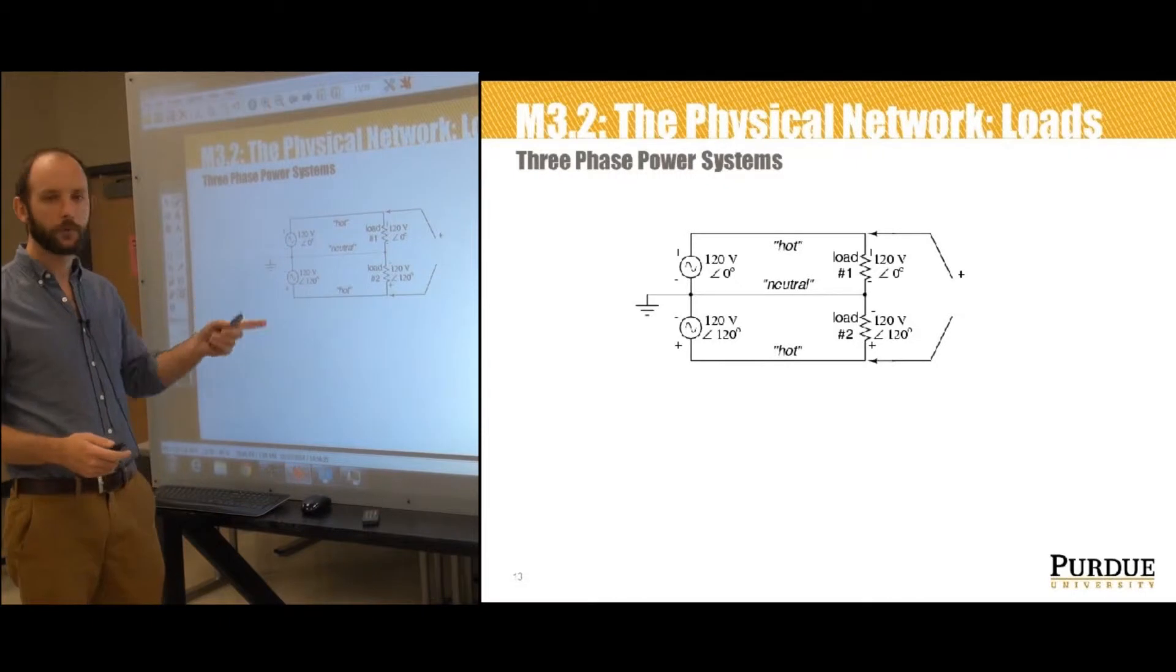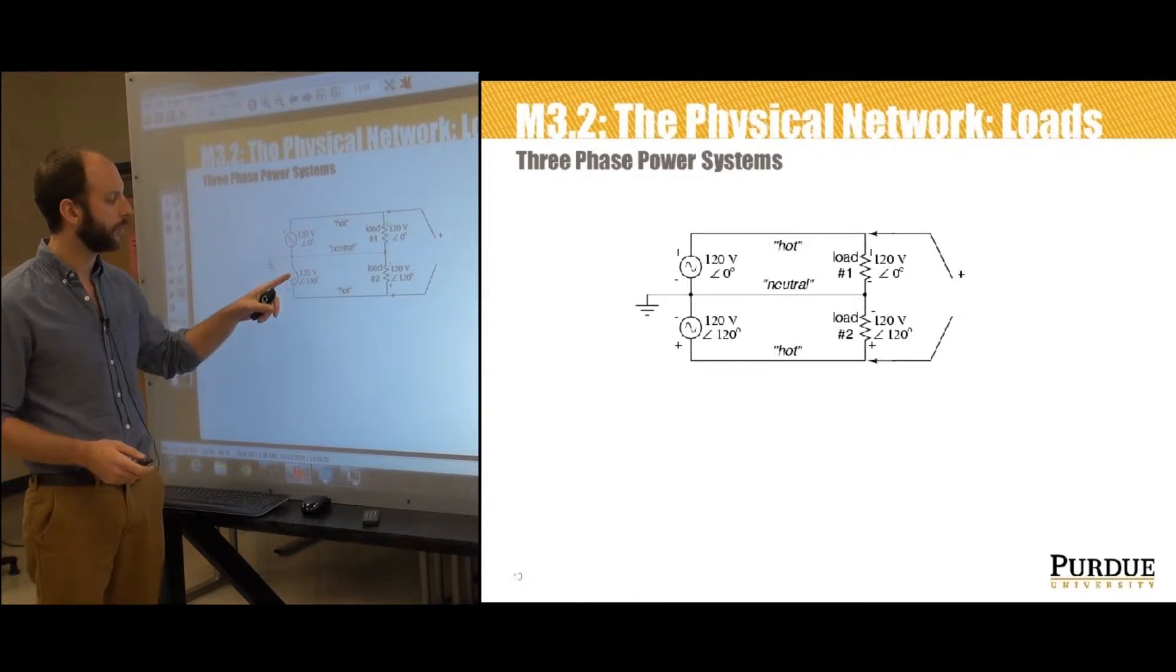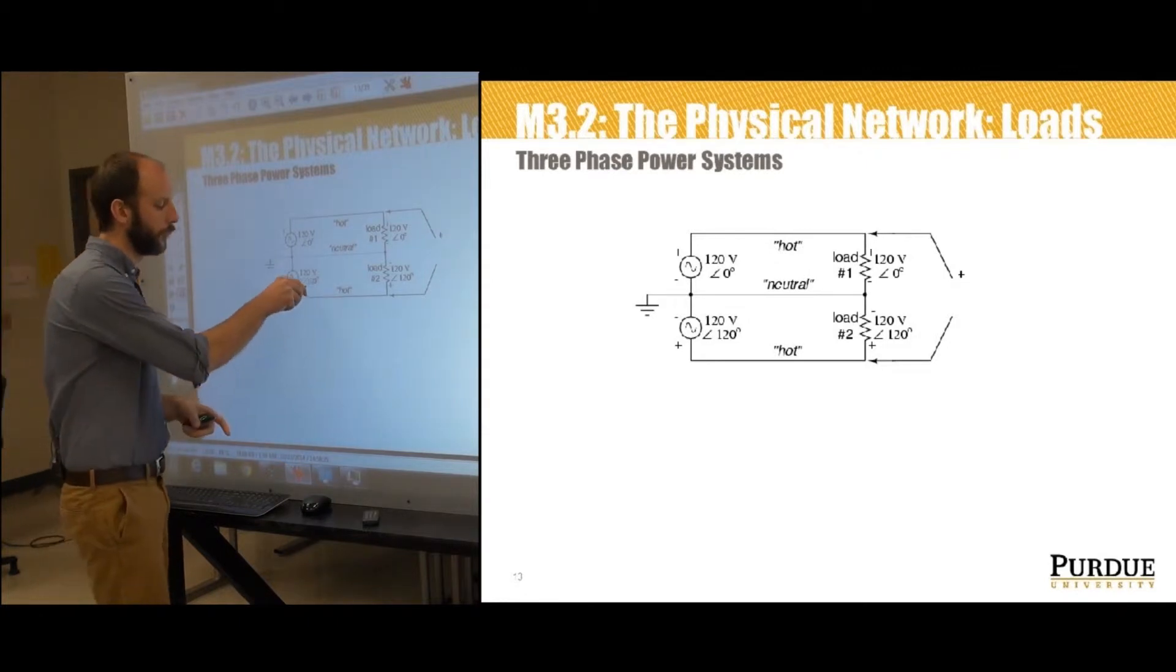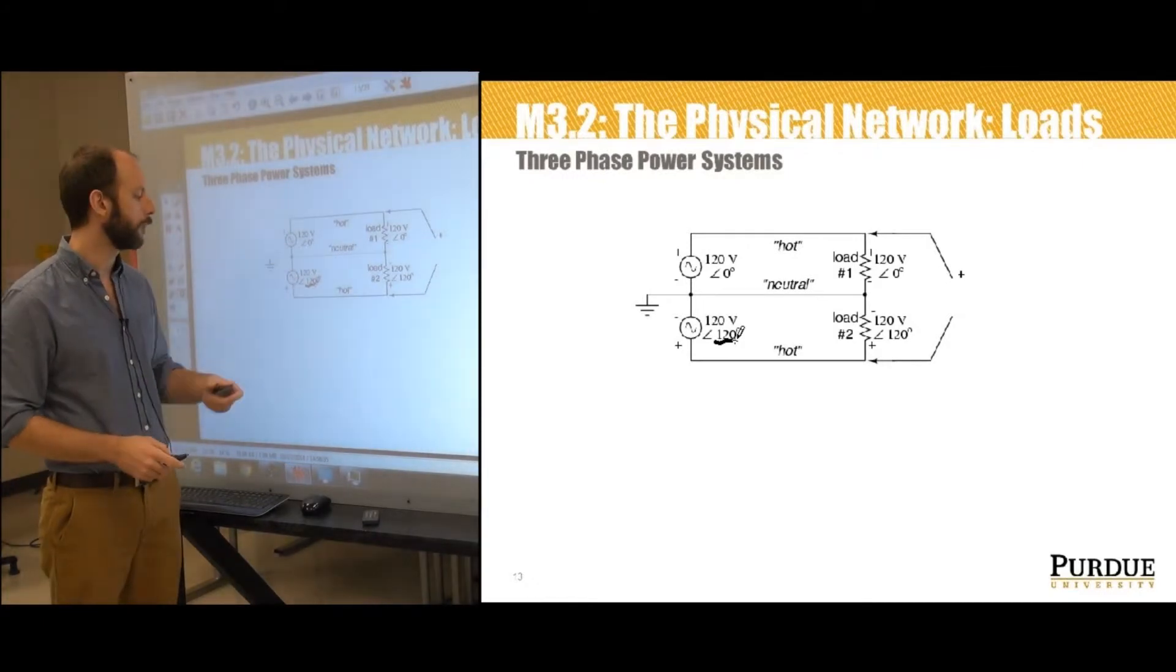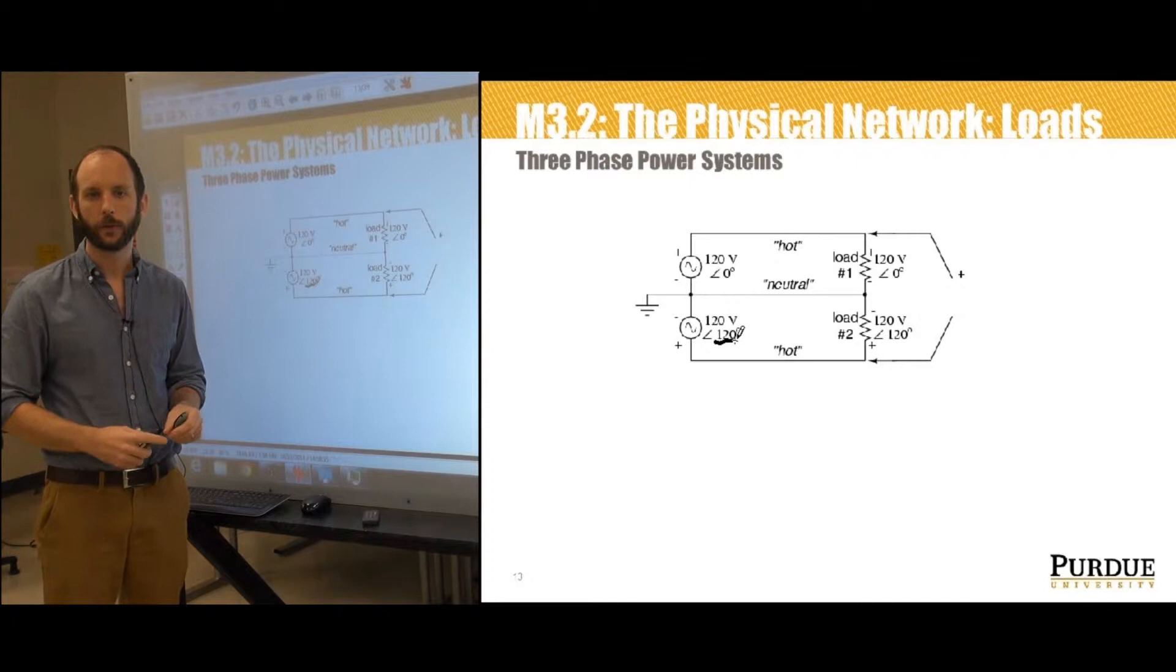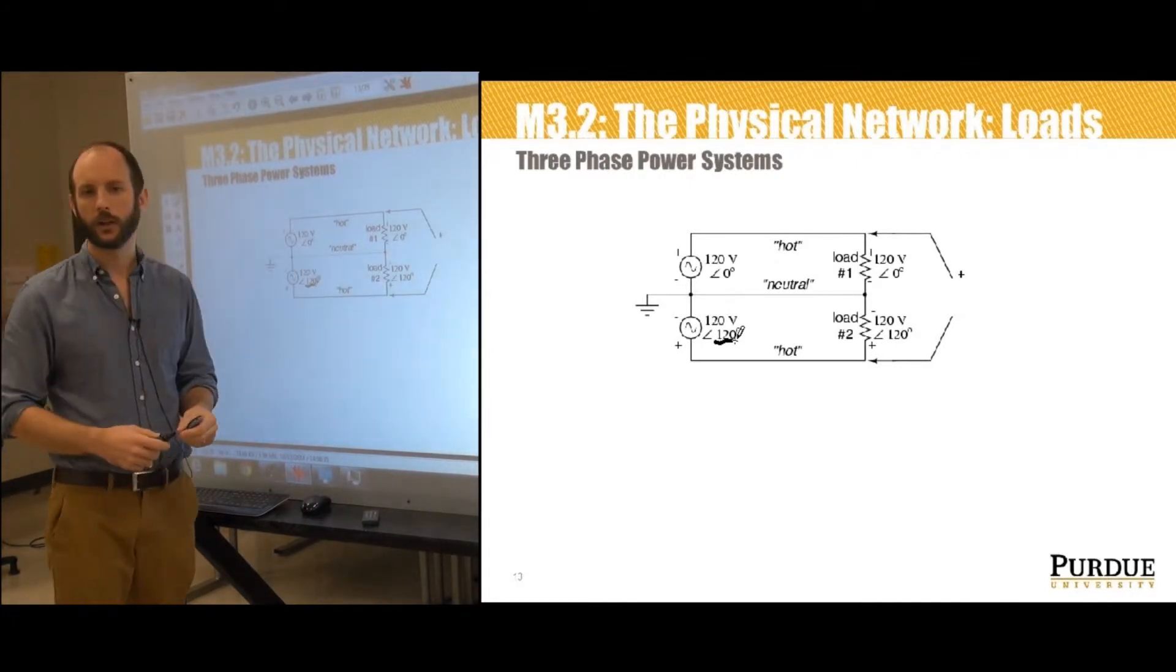So imagine that we make one small change and what that change is going to be is we're going to adjust the phase shift between these two voltage sources where previously they didn't have any phase shift between them. Now we're going to introduce this 120 degrees of phase shift just by adjusting the relative timing of the bottom generator as referred to the top generator. So we've got 120 degrees of phase, 120 at angle zero and 120 at 120.